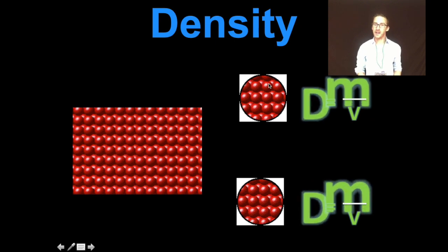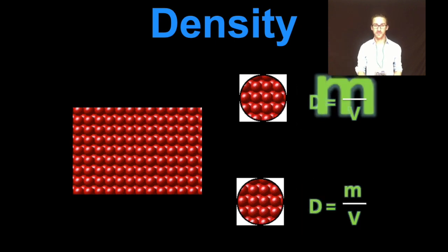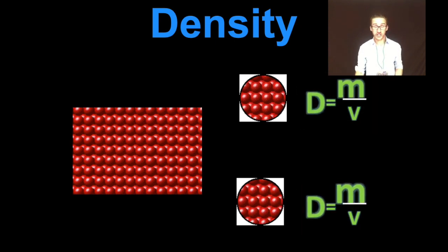And it doesn't matter whether it had a small amount or a large amount of the substance, the density will always be the same for that given substance. The ratio of mass to volume will always be the same for a given substance in a given phase. Intensive property. And we can then use it to help identify what material we're working with.